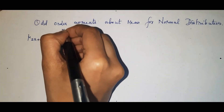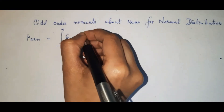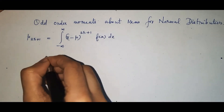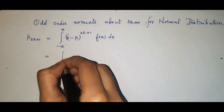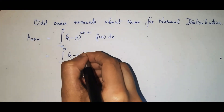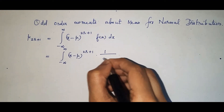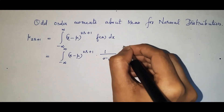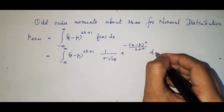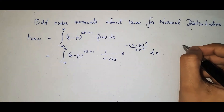So μ₍₂ᵣ₊₁₎ is equal to the integral from minus infinity to infinity of (x − μ)^(2r+1) · f(x) dx. This equals the integral from minus infinity to infinity of (x − μ)^(2r+1) multiplied by f(x) expanded as (1 / (σ√(2π))) · e^(−(x−μ)² / (2σ²)) dx.